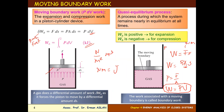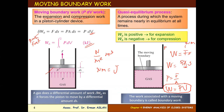Quasi-equilibrium is a process during which the system remains nearly in equilibrium at all times — meaning the boundary moves so slowly that pressure does not change significantly. Boundary work W_b is positive for expansion and negative for compression. When the piston expands upward, boundary work is positive; when compressed from top to bottom, boundary work is negative.